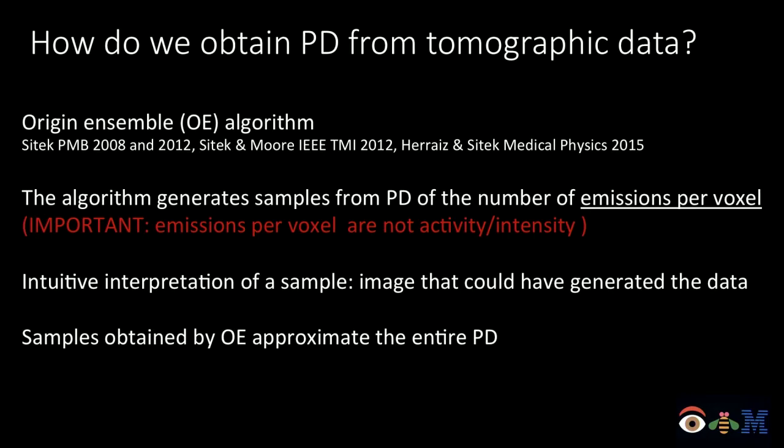There is a big problem: how do we obtain this posterior? As the previous talk showed, that's not a straightforward task with Poisson statistics. An alternative is the so-called Origin Ensemble algorithm, developed by my colleagues over the years. It's actually much easier — even trivial — to implement, and it provides these distributions. The key difference is that the image is not defined in terms of Poisson activities, but in terms of how many events occurred in each voxel, which is a count rather than a continuous activity variable.